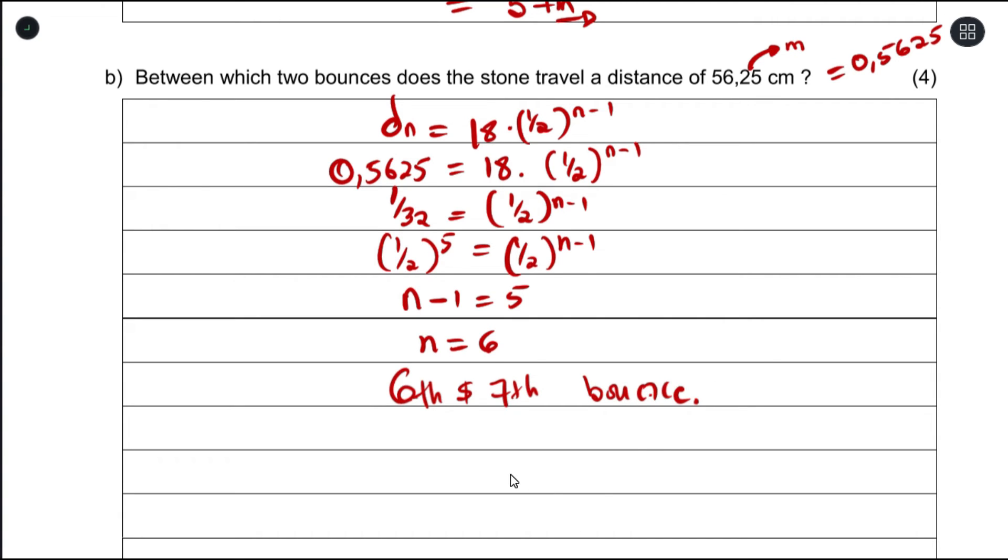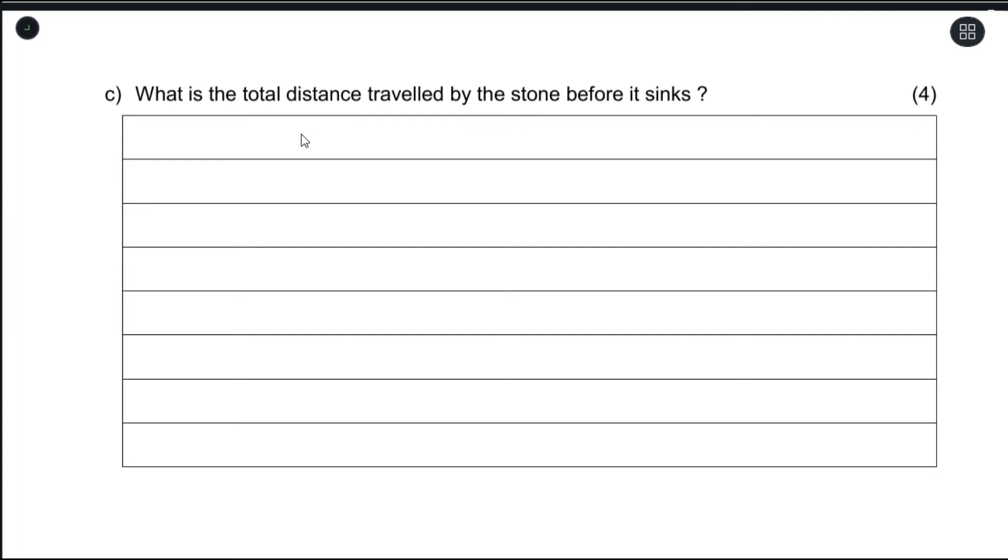Part c wants us to find the total distance traveled by the stone before it sinks. Our equation is d_n equals 18 times one-half to the power of n minus 1. This reminds us of the geometric series formula where a is our first term, r is our common ratio. For this question, the first term is 18 and our r would be one-half.